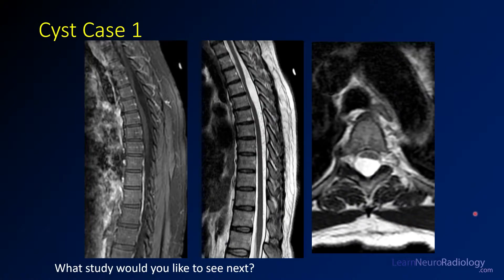This is cyst case number one. We have images from an MRI of the thoracic spine. On the post-contrast with fat saturation, you see a little bit of deflection of the thoracic spinal cord, confirmed on the sagittal T2. You see the normal contour of the cord deflected anteriorly, with something that looks perhaps a little bit rounded. On the axial images, you see a rounded lesion in that location, with the spinal cord deflected anteriorly. We need to consider what additional study might help better evaluate this lesion.